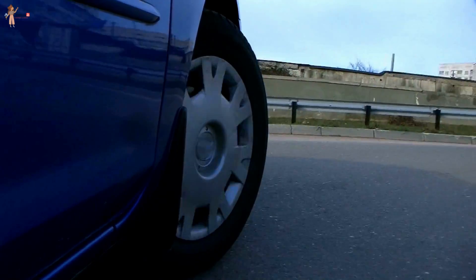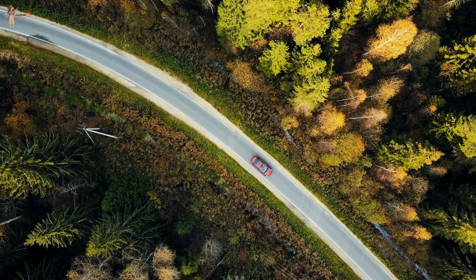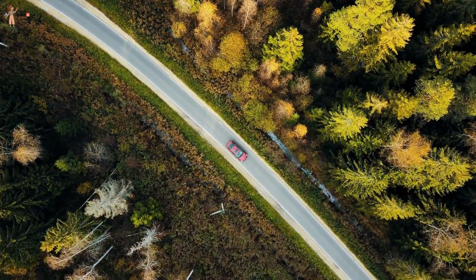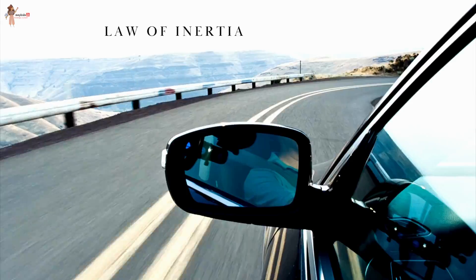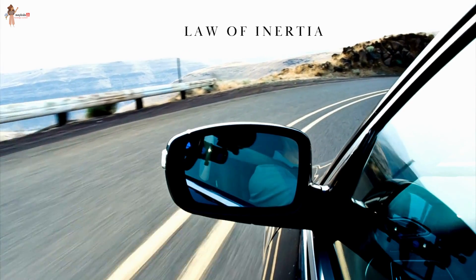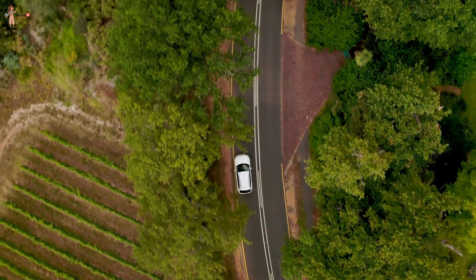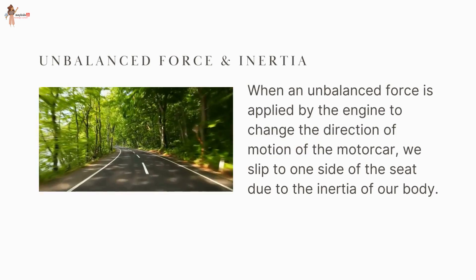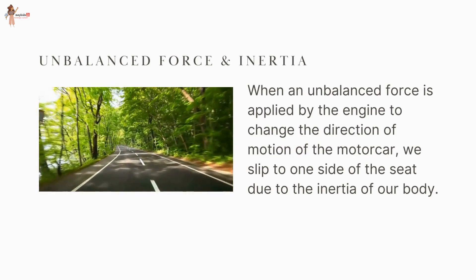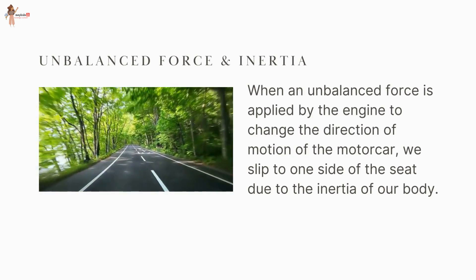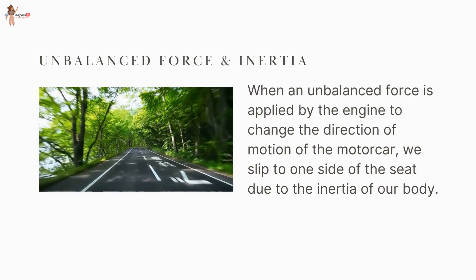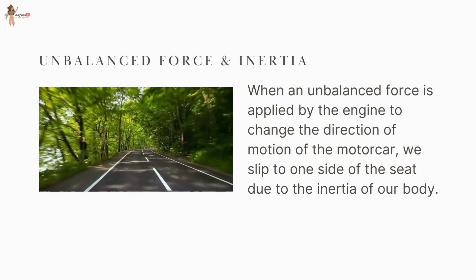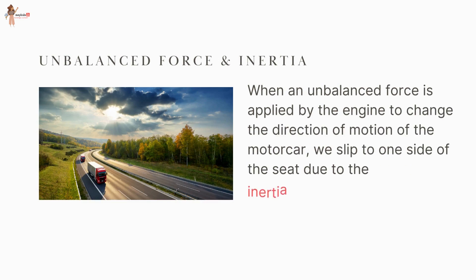When a motor car makes a sharp turn at high speed, we tend to get thrown to one side. This can be explained on the basis of the law of inertia — we tend to continue in straight-line motion. When an unbalanced force is applied by the engine to change the direction of the motor car, we slip to one side of the seat due to the inertia of our body.